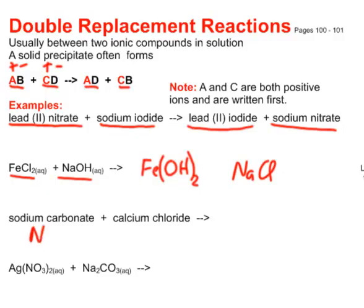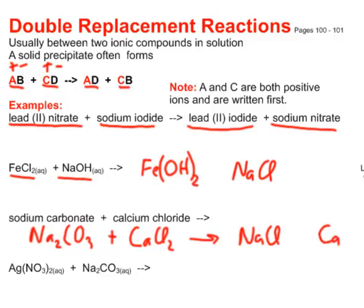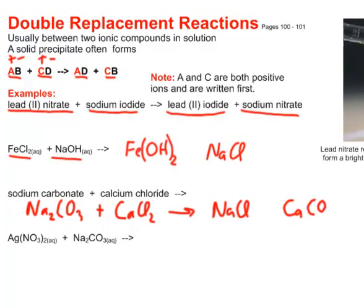Sodium carbonate Na2CO3 and calcium chloride CaCl2 trade our partners so that what we're going to get is the sodium will now join with the chlorine and the calcium will now join with the carbonate. And we'll worry about balancing these equations next.